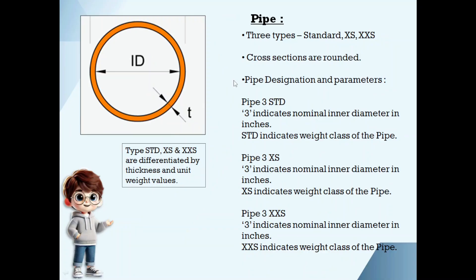Pipes are of three types: standard, extra strong, and double extra strong. Cross sections are rounded for all three types. At this condition we make inner diameter as constant. For example, pipe 3 standard, if you take 3 inch is the inner diameter. Pipe 3 extra strong, if you take 3 inch is the inner diameter. Pipe 3 double extra strong, if you take 3 inch is the inner diameter. But when it comes to standard, extra strong, and double extra strong, thickness will be increased.